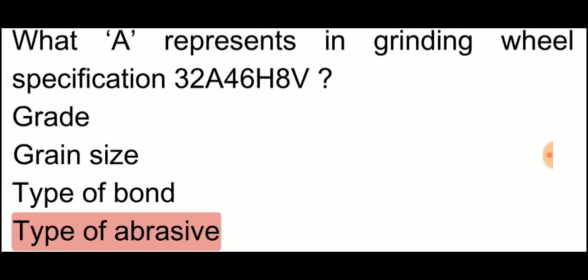What A represents in grinding wheel specification, which is given, 3, 2, A, 4, 6, H, 8, V. So what does A represent? A represents type of abrasive.